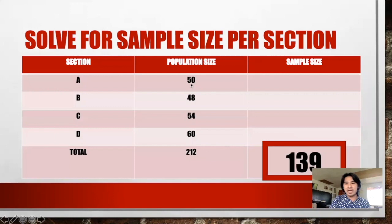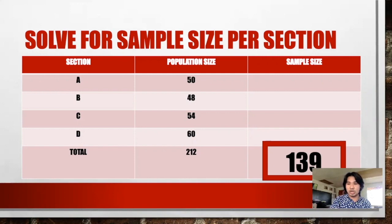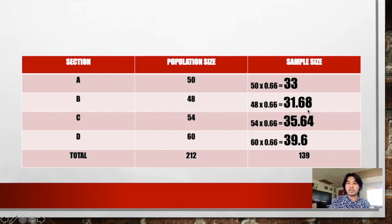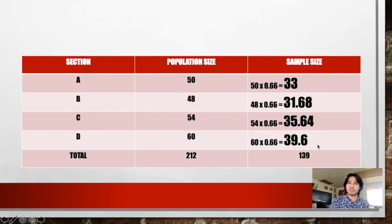We will multiply the population of each section by 66% to get the number of students who will answer the survey questionnaire per section. Section A: 50 times 0.66 equals 33. Section B: 48 times 0.66 equals 31.68. Section C: 54 times 0.66 equals 35.64. Section D: 60 times 0.66 equals 39.6.